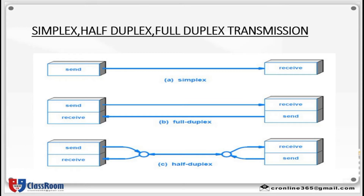Next is duplex transmission. Data can be transmitted and received — this is known as duplex transmission. Duplex transmission is subdivided into three types: simplex, full duplex, and half duplex. All three require a sender as well as a receiver. In simplex transmission, the sender sends the data and the receiver accepts that data.